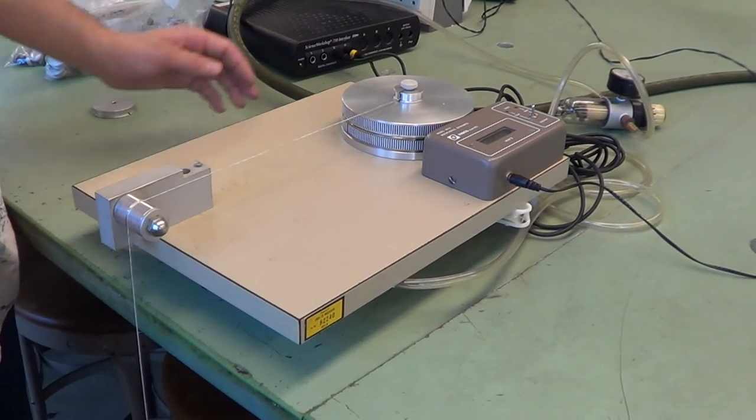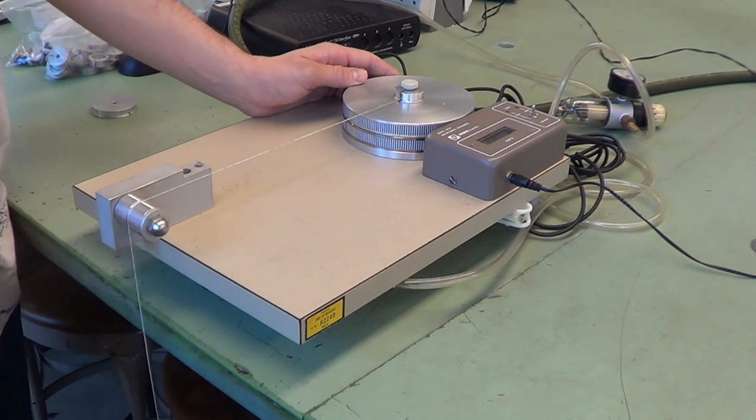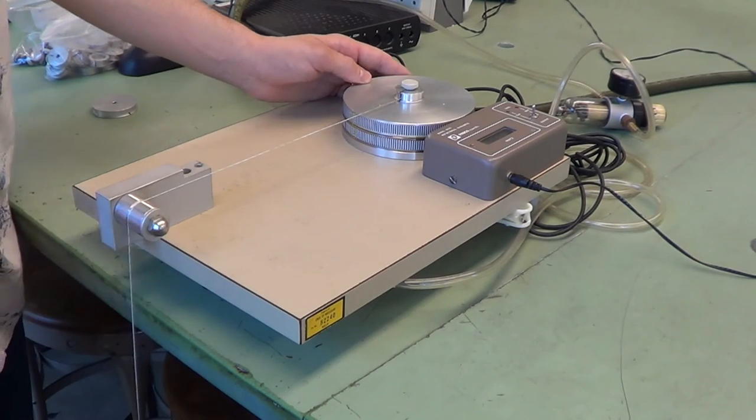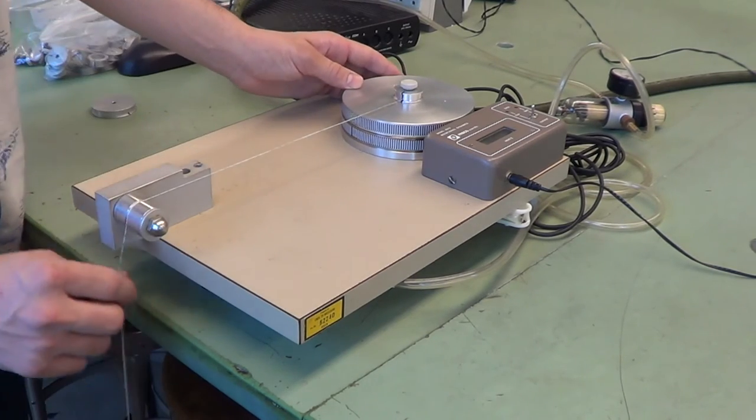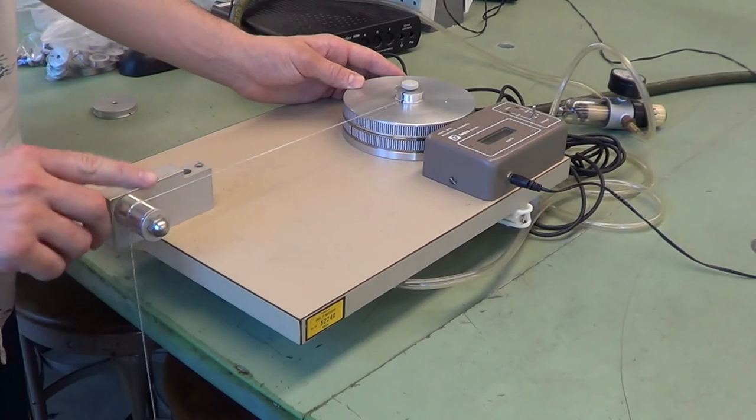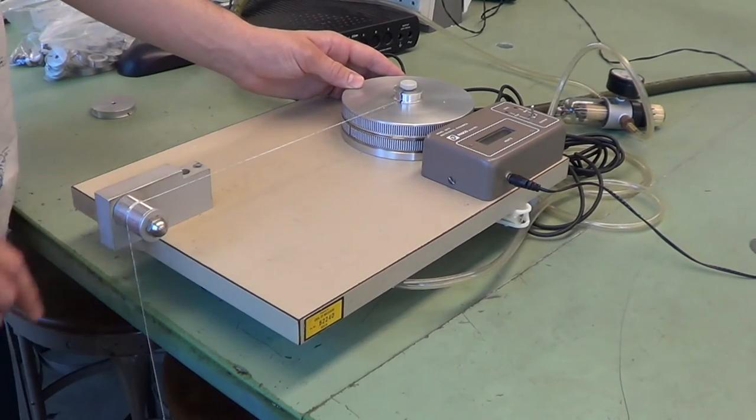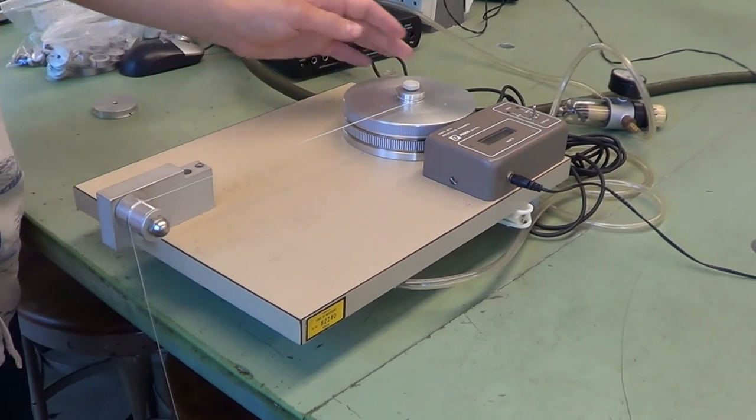In actually making this experiment work, we essentially need to wind up the string around the pulley. So to do so, we put this pulley over the frictionless bearing and simply spin the top disc.